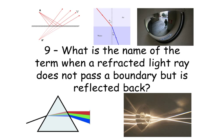Question number nine. What is the name of the term when a refracted light ray does not pass a boundary but is reflected back?